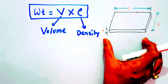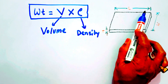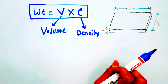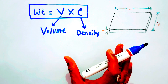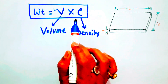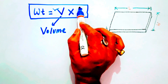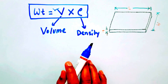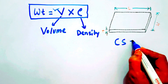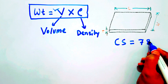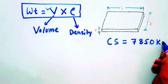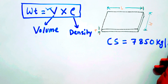Here I have a diagram of a plate. The length of this plate is L, the width of the plate is W, and the thickness of the plate is T. To calculate the weight of any plate, we first need the volume and then rho, the density. The density of carbon steel is 7850 kilogram per meter cube.